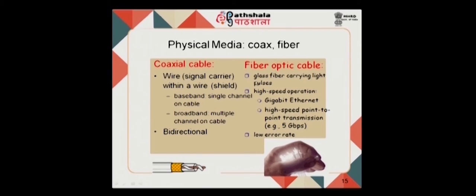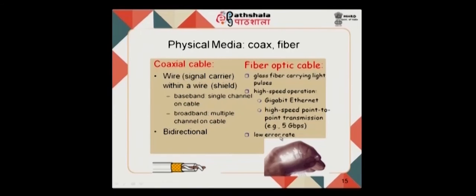Fiber optic cable carries light pulses through glass fibers — it looks like thin plastic but has light coming out of it. Fiber optic cables support very high speeds; gigabit ethernet typically uses fiber, with point-to-point data transfer rates of 5 gigabits per second and above. Fiber optic cables also have very low error rates compared to coaxial and twisted pair cables.